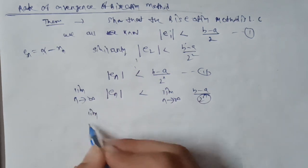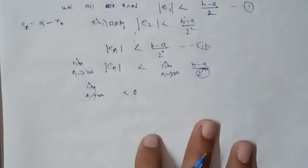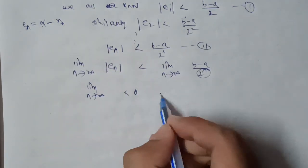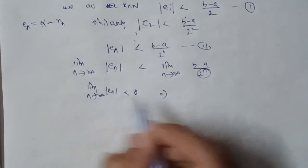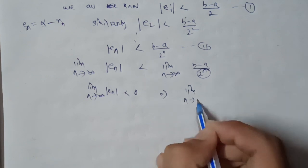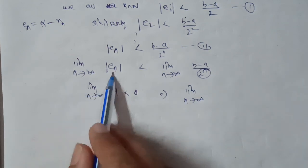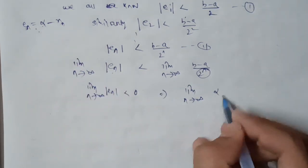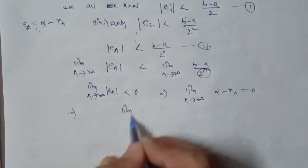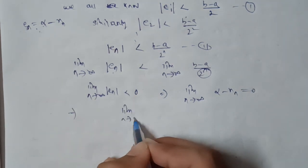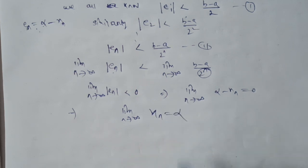Taking the limit as n tends to infinity: |xₙ - x| is less than zero, which equals zero. So the limit as n tends to infinity of |α - xₙ| equals 0. This implies the limit as n tends to infinity of xₙ equals α.